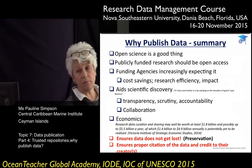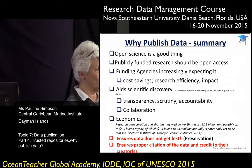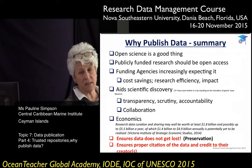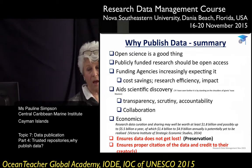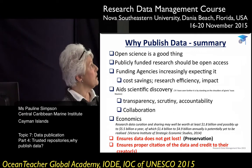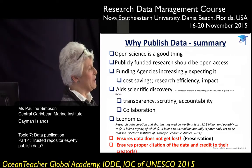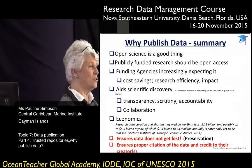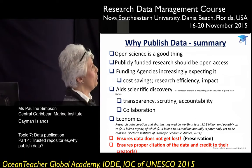Let's summarize why we should publish data under open science. Some of this may be stating the obvious, but open science is a good thing. Publicly funded research should be open access — we all pay our taxes, so we expect to partake of what that produces. Funding agencies are expecting it because of cost savings, non-duplication, research efficiency, and the impact of what their funding is achieving. I'll quote Isaac Newton: 'If I have seen further, it is by standing on the shoulders of giants' — even great scientists like Newton used other people's research and data to refine, reuse, and come up with his own wonderful discoveries.